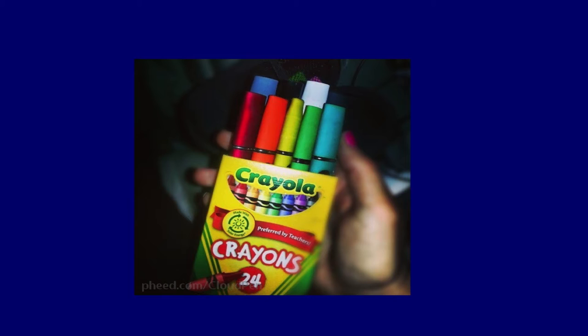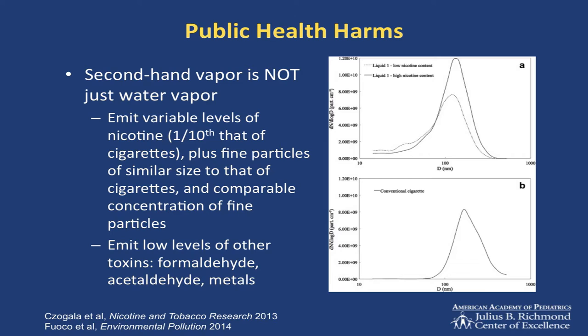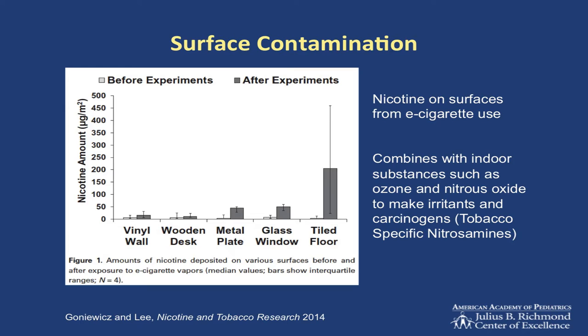Secondhand vapor is not just water vapor. There's variable levels of nicotine, about a tenth of that of cigarettes. But there's still particulate release comparable in size to cigarettes and in comparable concentration. There are low levels but measurable and absorbable levels of formaldehyde, acetaldehyde, and heavy metals. The particulates are a really important issue because what you see when people puff is the water vapor. You don't see the particulate cloud that others are exposed to. There is surface contamination. Nicotine on surfaces from e-cigarette use is absorbed. It does combine with other substances and forms tobacco-specific nitrosamines, just like combustible cigarettes do.